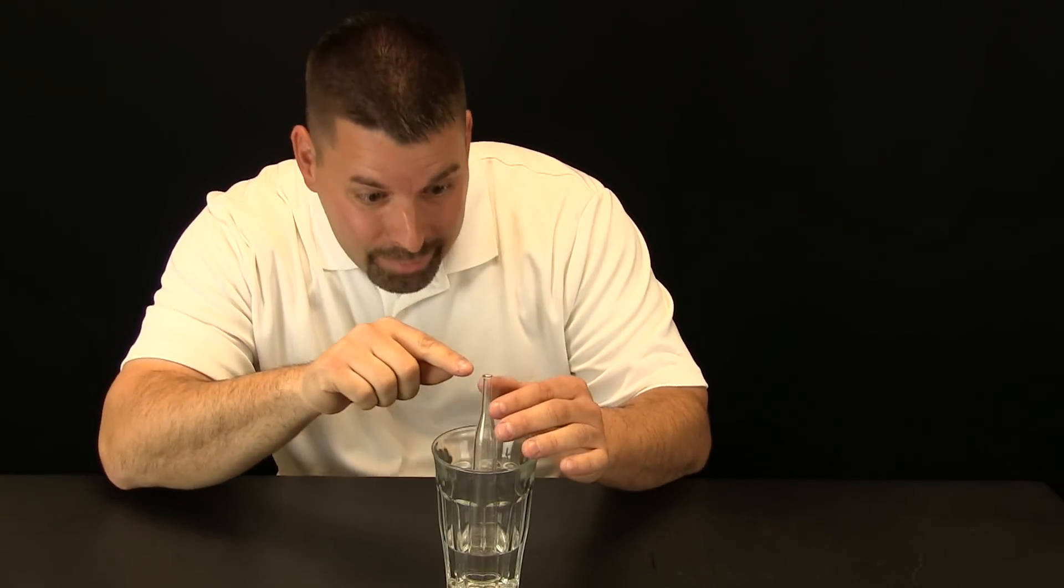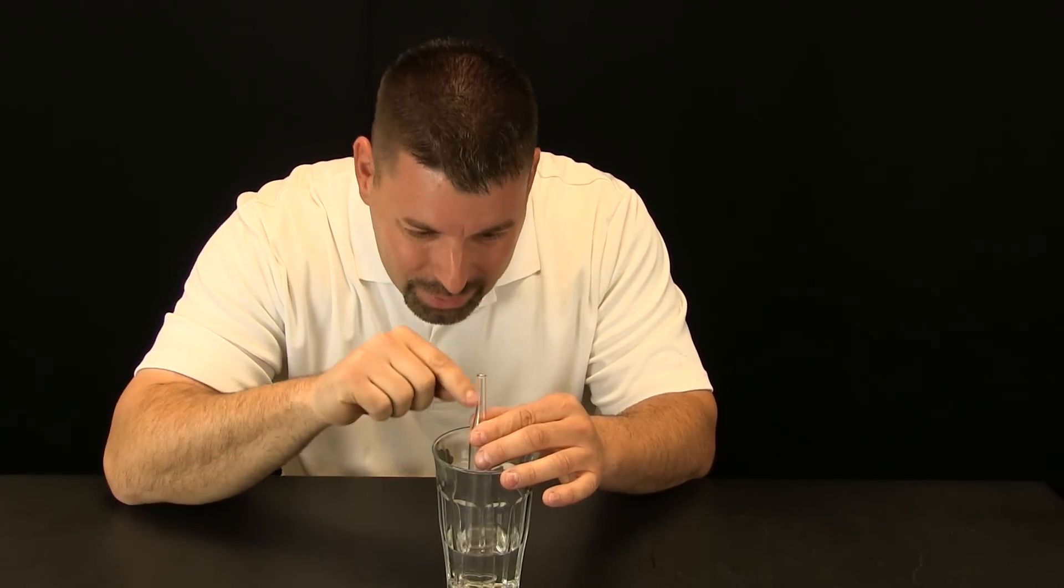So if I can blow over the top of this turkey baster with air that is moving quickly enough I should be able to lower the pressure inside the turkey baster and then watch the water come right up the top of the turkey baster. But I cannot blow across that fast enough. I need a way to get the air moving faster and for that I need a tool.